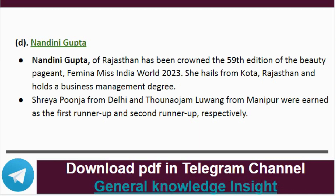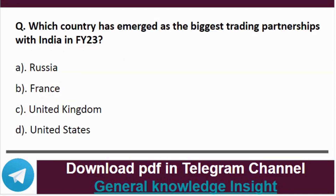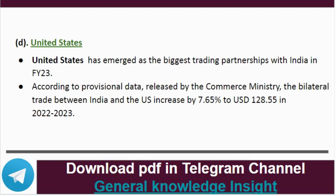Question 11: Which country has emerged as the biggest trading partner with India in financial year 2022-23? The correct answer is option D, that is the United States. The United States has emerged as the biggest trading partner with India in financial year 2022-23. According to provisional data released by the Commerce Ministry, the bilateral trade between India and the US increased by 7.65 percent to US dollar 128.55 billion in 2022-2023.